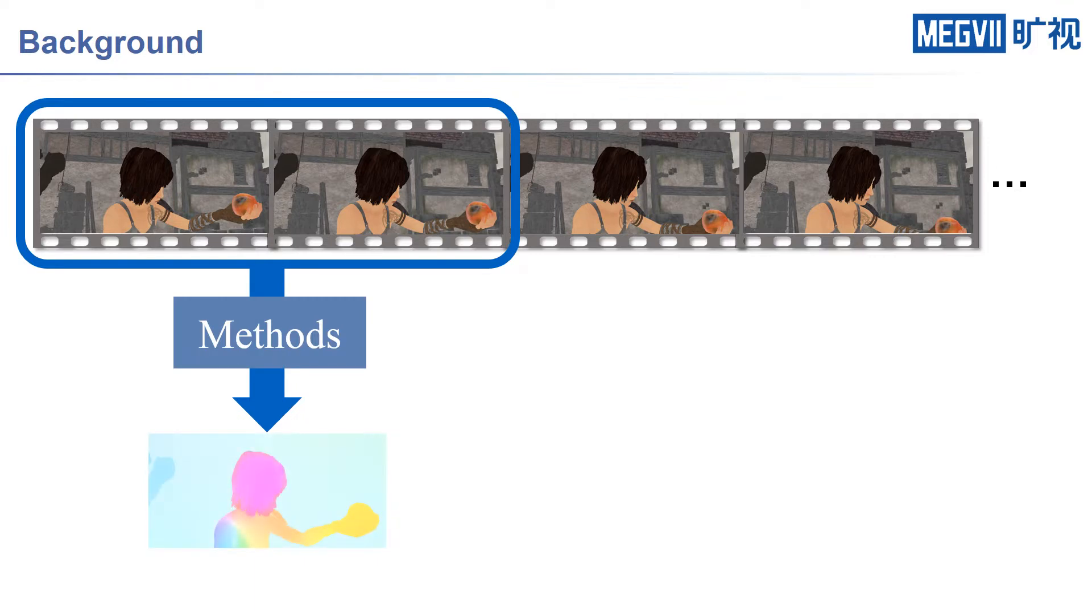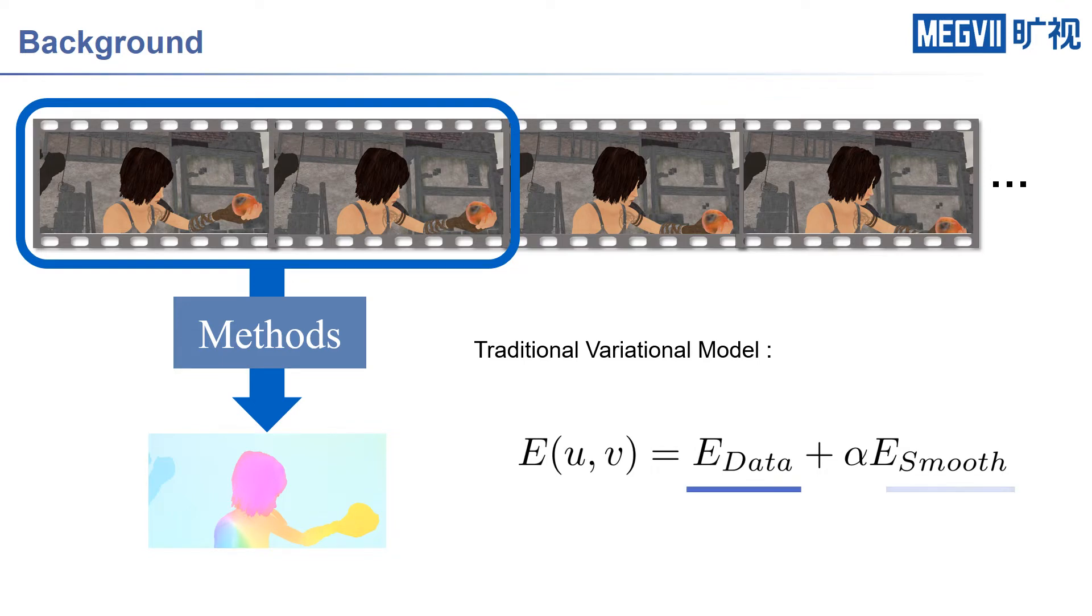Traditional optical flow algorithms formulate the dense matching as an energy minimization problem that explicitly makes constraints on feature similarities and spatial affinities, namely data term and smooth term, respectively.